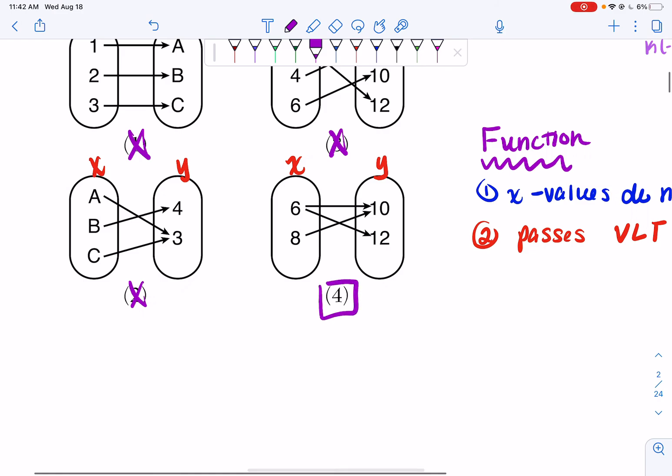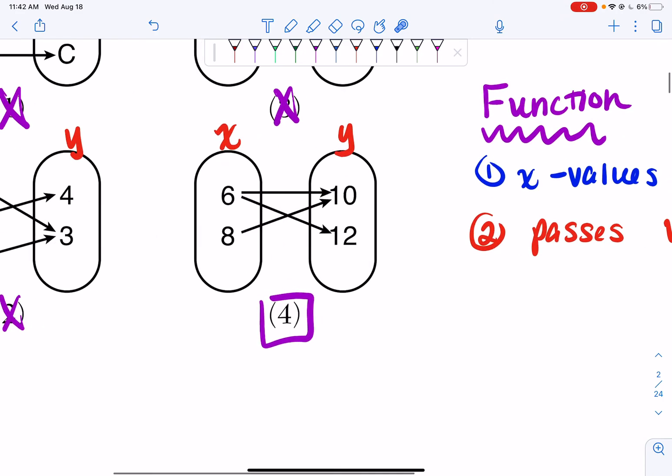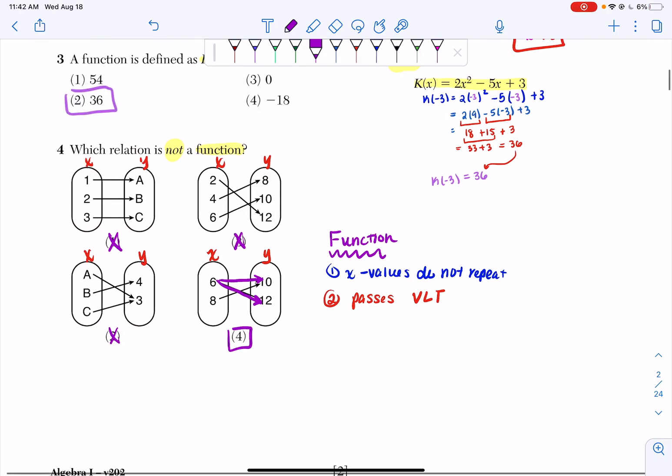So that means it has to be choice 4, but let's see why. If I plug in 6, I can get 10. Ooh, if I plug in 6, I can also get 12. Remember, it's not possible to be in the same place at once. So I can't plug in 6 and get 10 and plug in 6 and get 12. It's just not possible. So in this case, my x value does repeat.